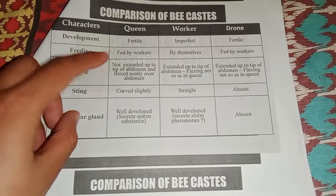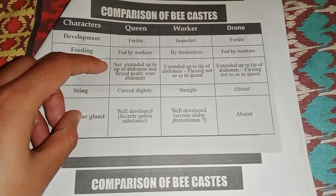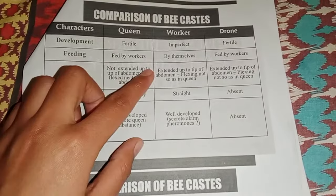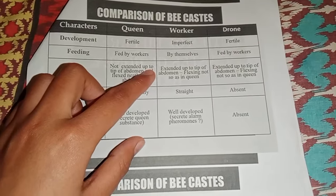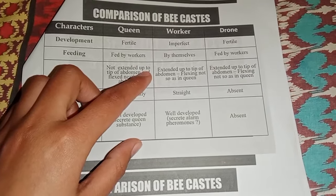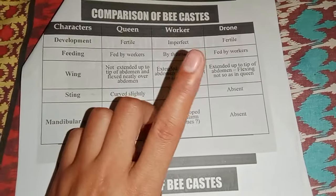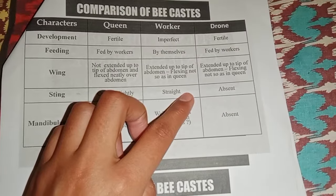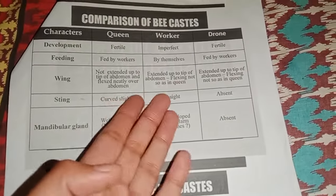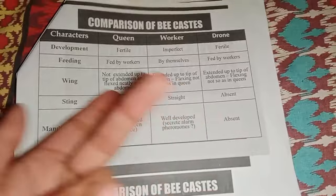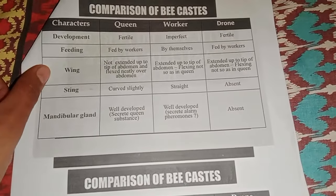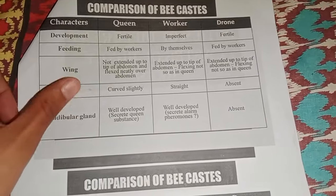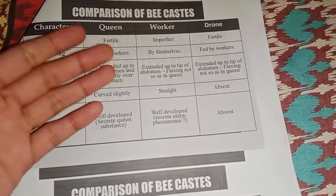If we talk about wings, in the queen the wings are not extended up to the tip of the abdomen and flex nearly over the abdomen. In the worker, wings are extended up to the tip of the abdomen, not flexing as in the queen. In the drone, wings also extend up to the tip of the abdomen, not flexing as in the queen — so the queen is different from the drone in wing structure. Regarding the sting, the queen's sting is curved slightly.